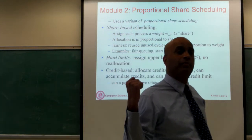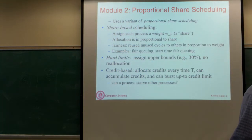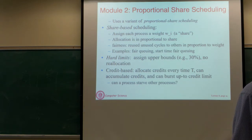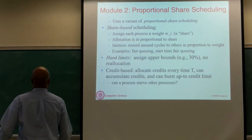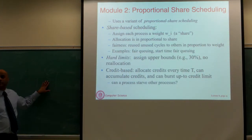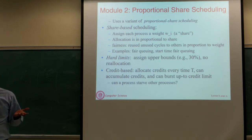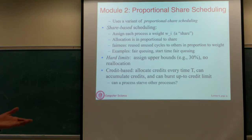One important thing: the weights determine the fraction of CPU time you get assuming all containers are actually wanting to use their share. Suppose the processes in one container are sitting there idling — not doing anything. The time slices given to it are going to be wasted because there is nothing to run inside that container. The question is: should you just waste those time slices, or should you use them somehow for some other processes?